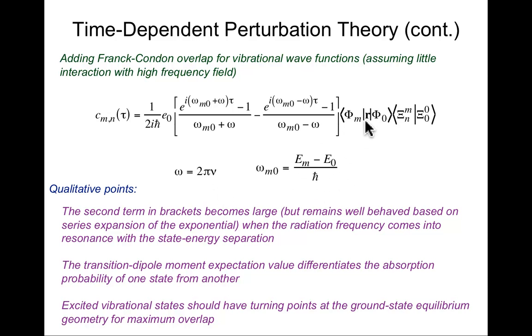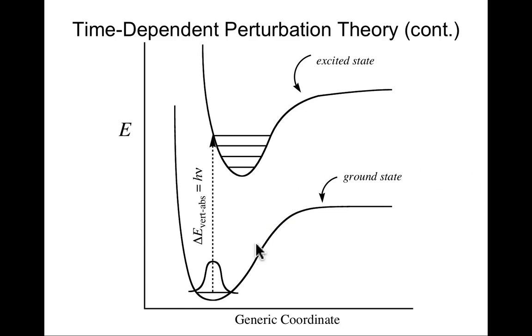In addition, though, there is this need for a transition dipole moment to be large, and there is finally a need for the vibrational overlap to be large. If you remember vibrational wave functions, only for the ground state vibrational wave function is the maximum probability at the equilibrium bond distance. As we go to excited vibrational states, they have maximum probability at the so-called turning points, right, where the vibration is hitting the potential within which it's vibrating.